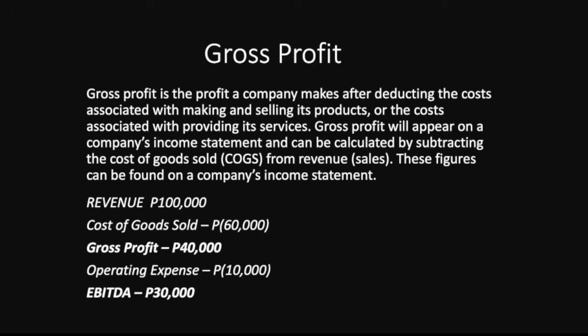Gross profit appears on a company's income statement and can be calculated by subtracting the cost of goods sold — the direct cost — from revenue or sales. For example, if revenue is $100,000 and the cost of goods sold or direct cost is $60,000, the difference is the gross profit. Less the operating expenses, that figure becomes the EBITDA.